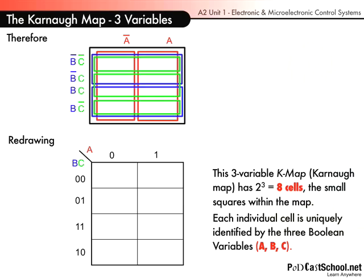Each individual cell is uniquely identified by three Boolean variables, A, B and C.